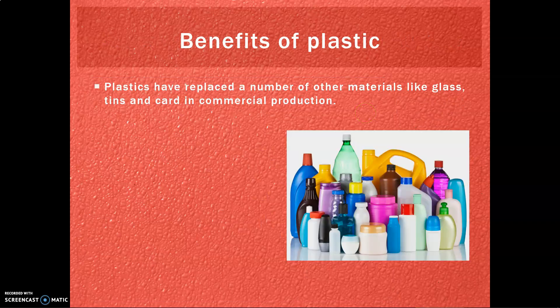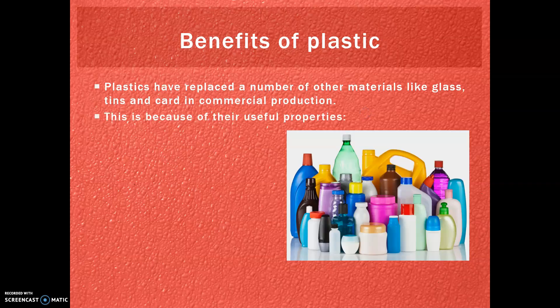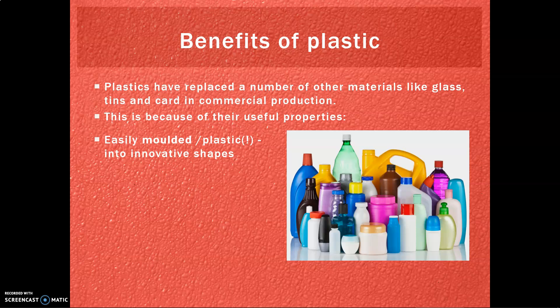Now we know how they're made, we should talk about why they're made. Plastics or polymers have replaced a lot of materials — things like glass, metal, and tins — in commercial production, because they have some really useful properties. The first being that they are easily moulded; you can heat them up and change them into all sorts of shapes. That's why these polymers are called plastics — because the term plastic is actually a real property meaning easily moulded into innovative shapes.